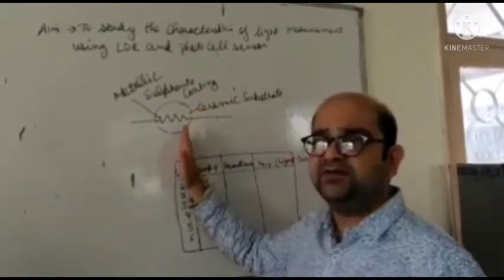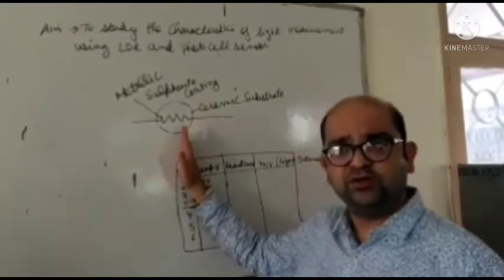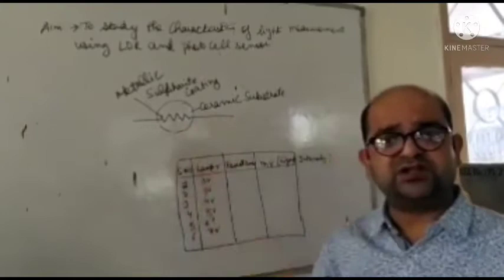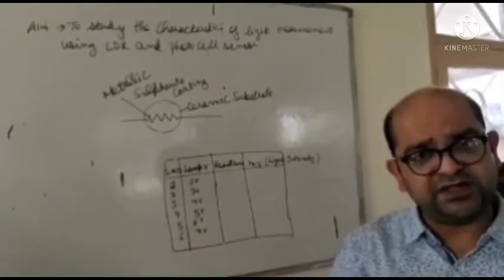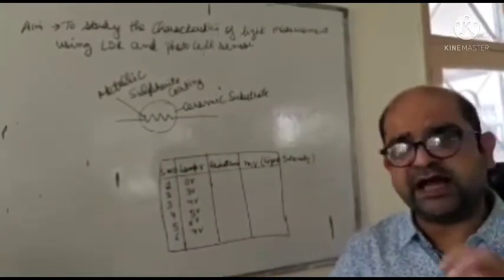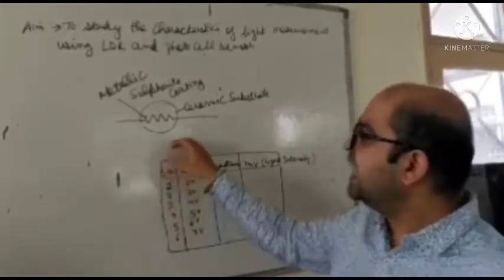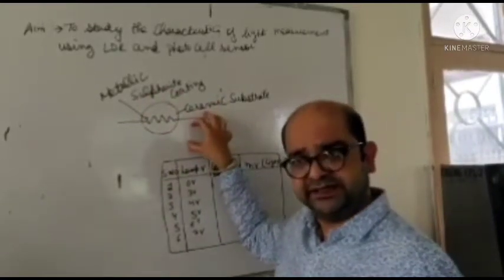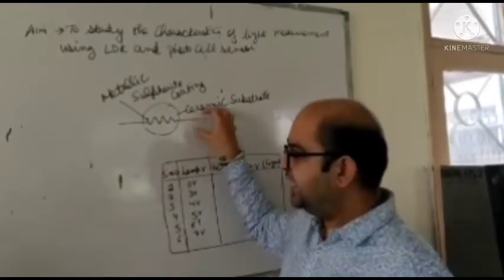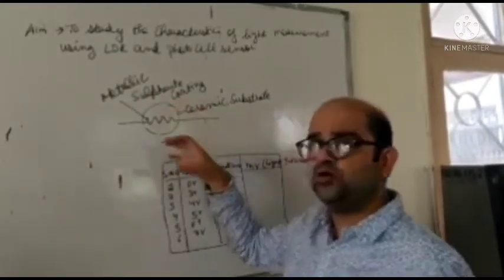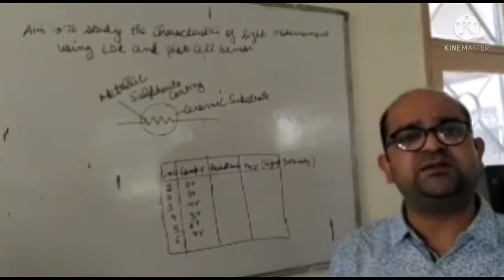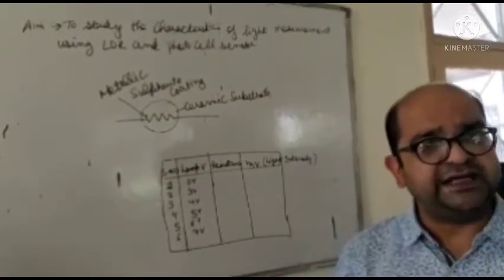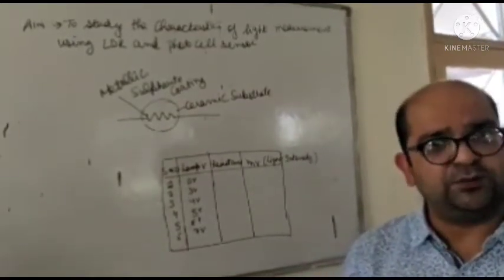Along with this LDR we are going to use a photosensor, which will actually sense the amount of light falling upon the LDR and give an indication about the light intensity. According to the change in light intensity falling upon it, the amount of resistance will change accordingly.